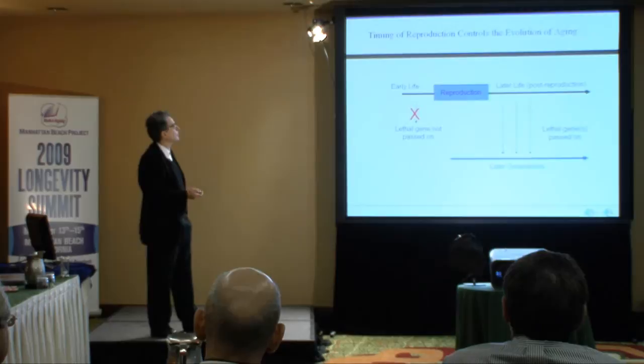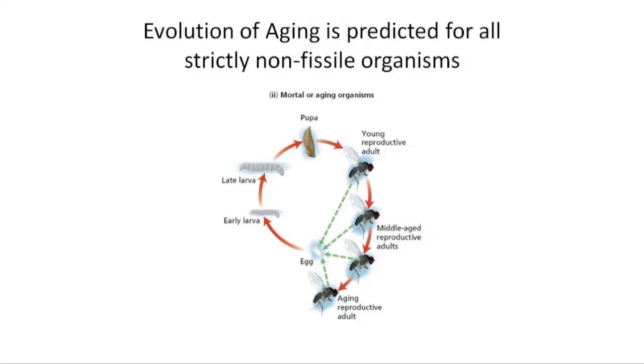Evolutionary theory predicts aging in all sexually reproducing non-fissile organisms. And of course, the most important organism is the fruit fly, Drosophila melanogaster. It is a classic mortal or aging organism. I'm showing you this so some of the biology I'll be talking about will be a little bit concrete for you.